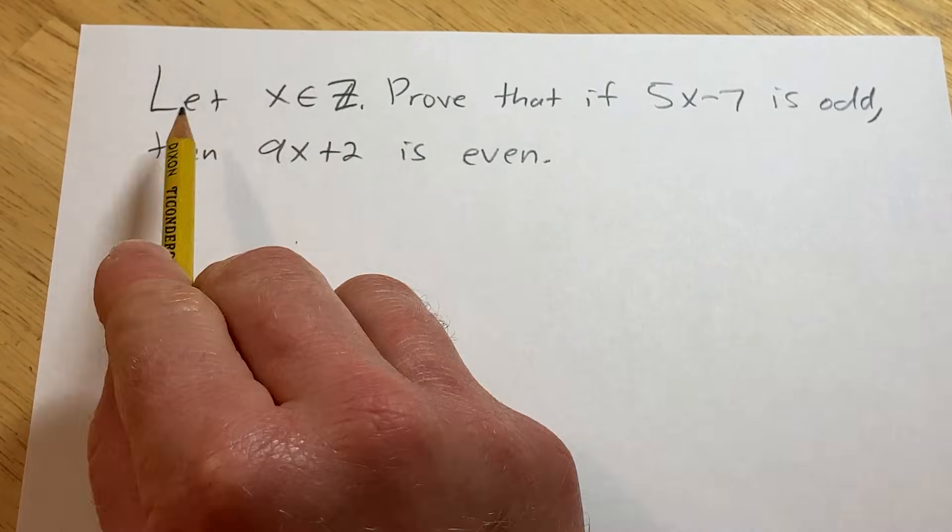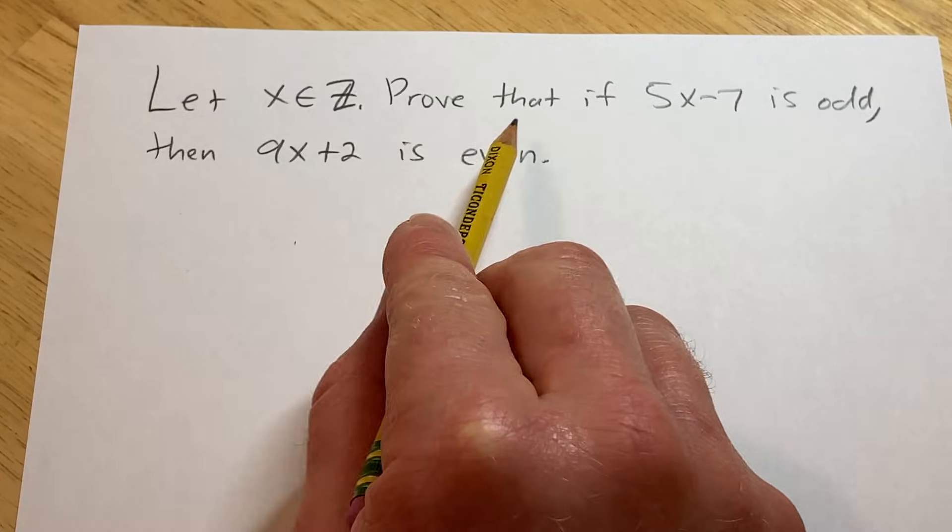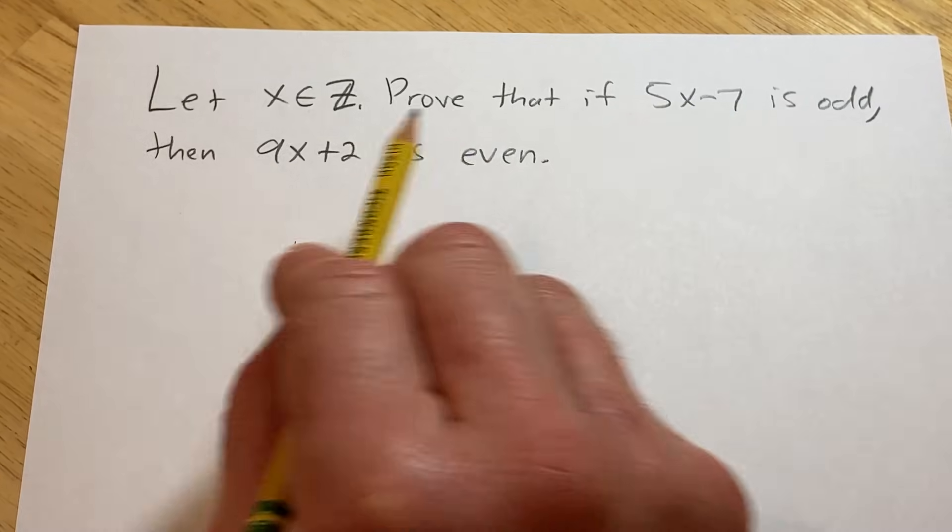Hi, in this video we're going to be doing a proof. So let x be an element in the set of integers. We have to prove that if 5x minus 7 is odd, then 9x plus 2 is even.